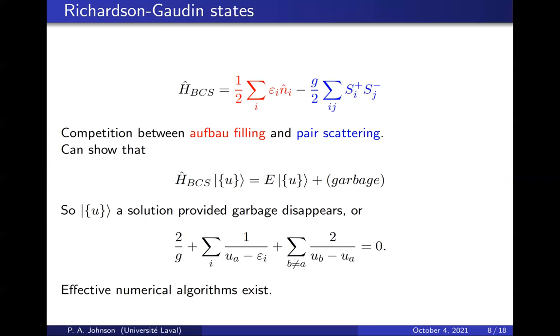So epsilon and G define the Hamiltonian, and then u's define the states. You have to solve the set of nonlinear equations for each set of u's. Each eigenvector of this Hamiltonian is defined by a different set of u's. In general, nonlinear equations are tricky, but these sets have very effective numerical algorithms, and it is easy to compute all of their solutions fairly easily. The scaling is sublinear even. So I would say that this problem is solved. You can compute all the eigenvectors of the Hamiltonian fairly easily.